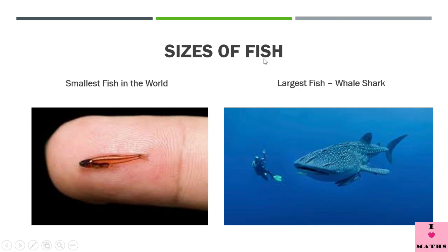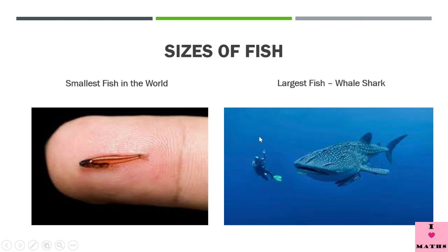Fish are of different sizes. The smallest fish in the world is less than 1 cm — just a few millimeters long — and it can fit on the tip of your finger. The largest fish is the whale shark. It is so big that a diver diving right in front of the whale shark looks tiny by comparison.